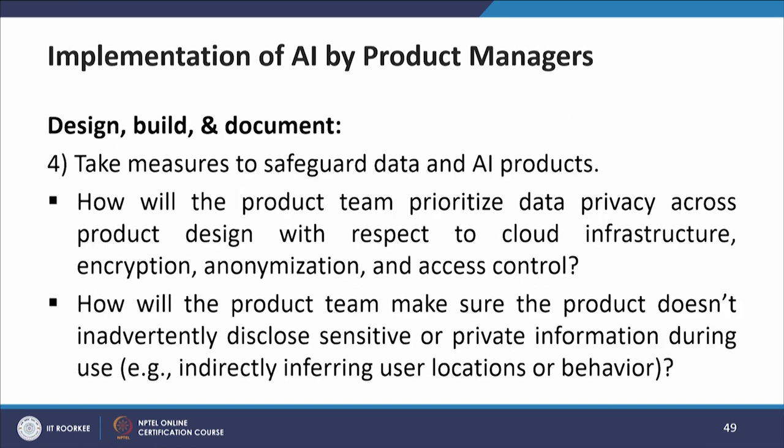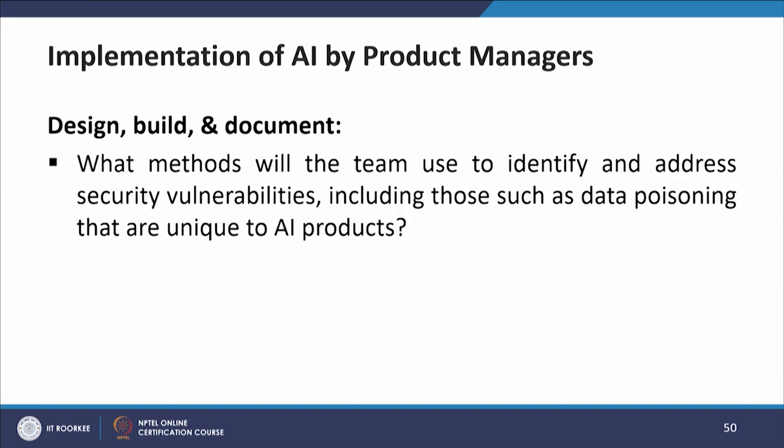The fourth step is to take measures to safeguard data and AI products. Key questions: how will the product team prioritize data privacy across product design with respect to cloud infrastructure, encryption, anonymization, and access control? How will the product team ensure the product does not inadvertently disclose sensitive or private information — for example, indirectly inferring user location or behavior? What methods will the team use to identify and address security vulnerabilities, including those unique to AI products such as data poisoning?